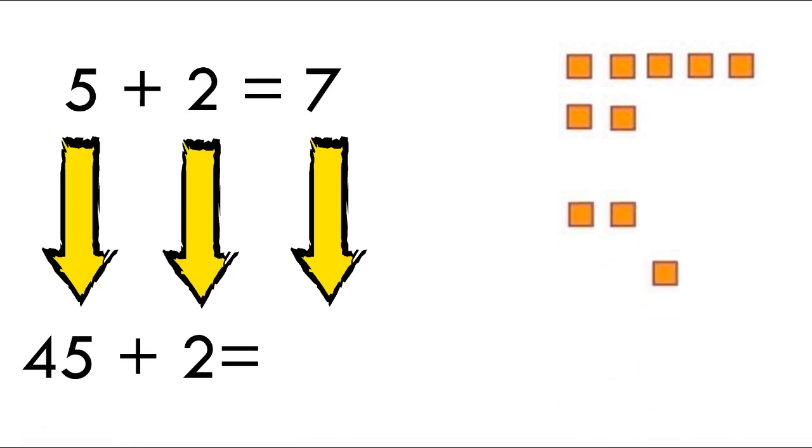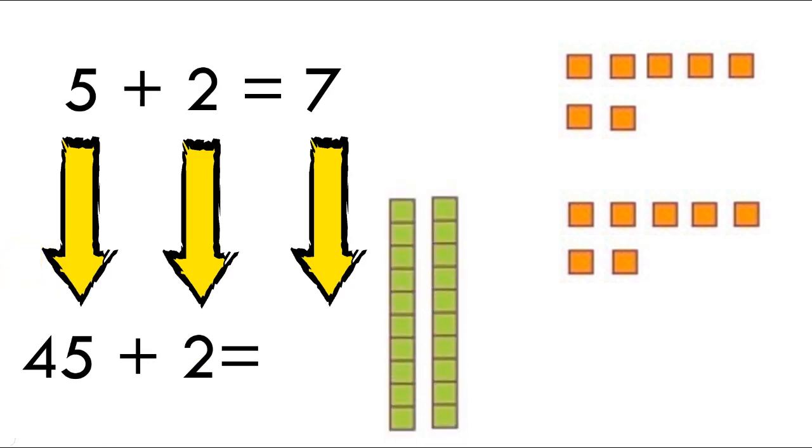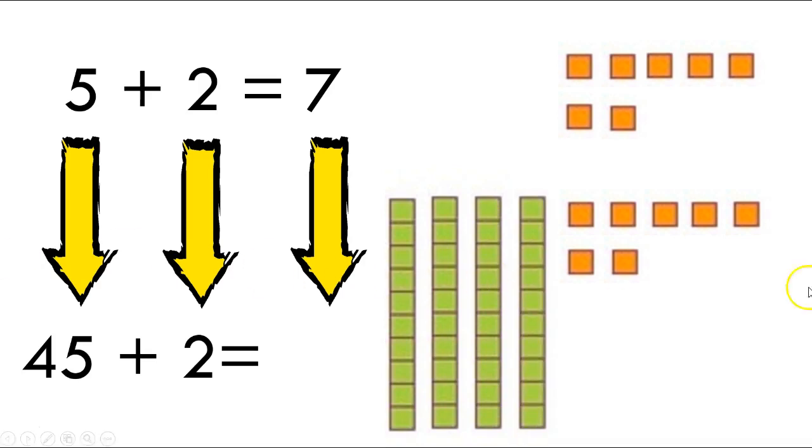So let's add those 7 ones. Now, we have 4 tens here. So all we have to do is add 4 tens to the beginning of our 7 ones. How many do we have all together now? We have 47. Very good.